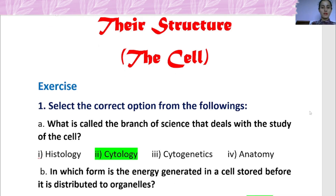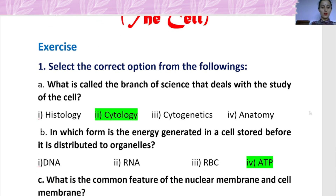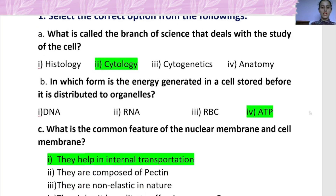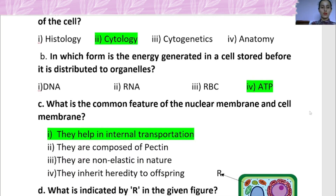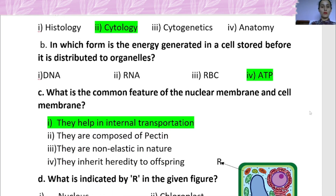Exercise 1 is a multiple choice question. Question A: What is called the branch of science that deals with the study of the cell? That is called cytology. Question B: In which form is the energy generated in a cell stored before it is distributed to organelles? That is ATP.